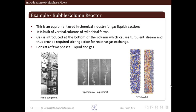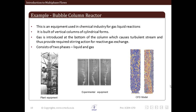We will now see some examples of multiphase flow — industrial examples that are relevant. The first is the bubble column reactor. This is basically a reactor used for carrying out chemical reactions in industry, mainly gas-liquid reactions.